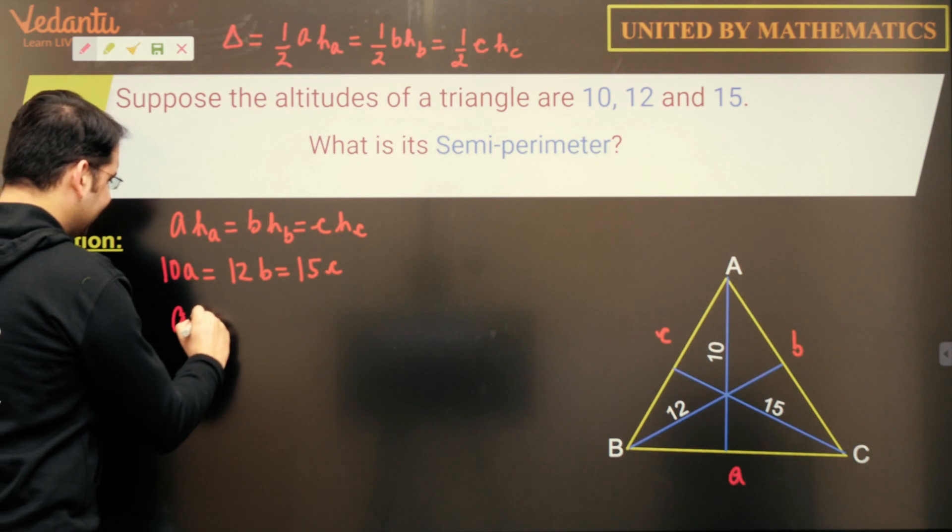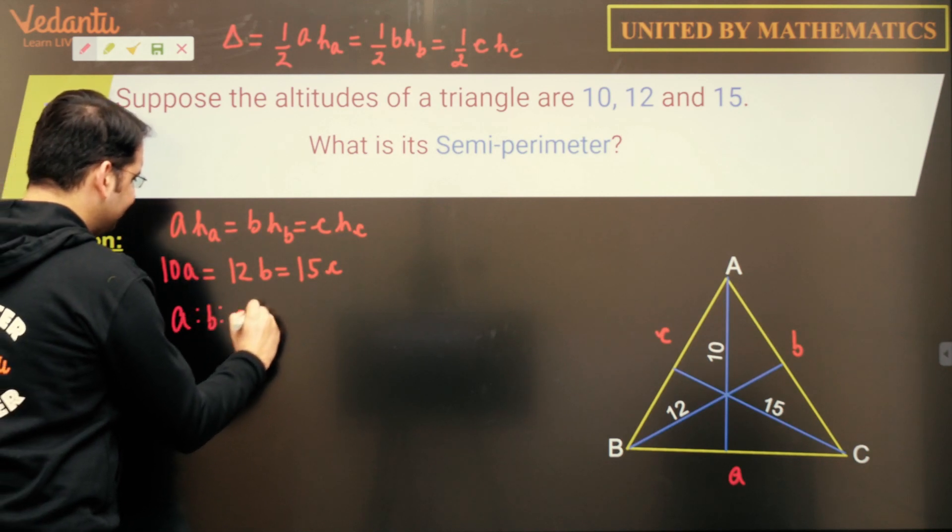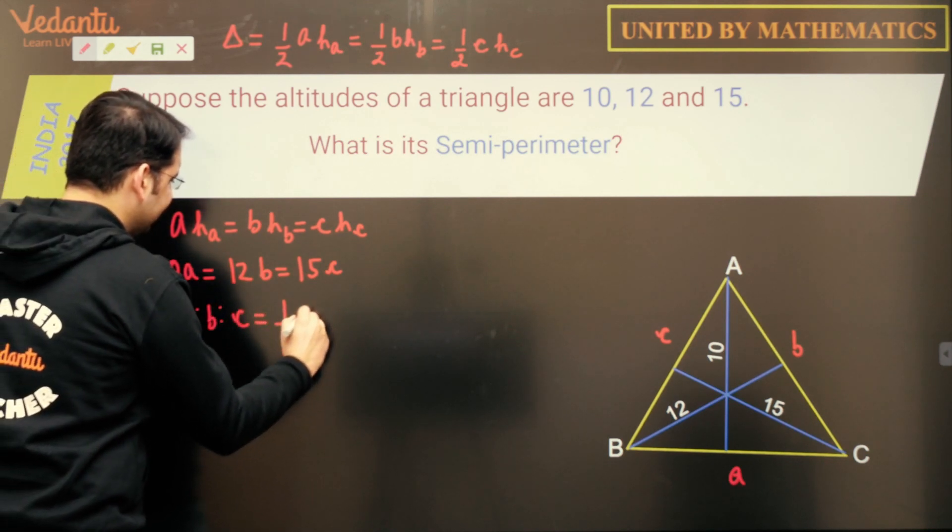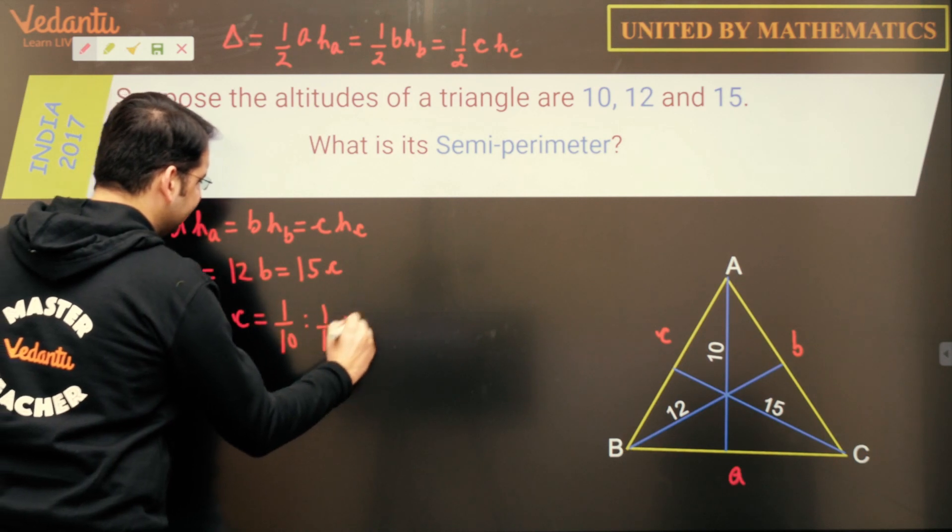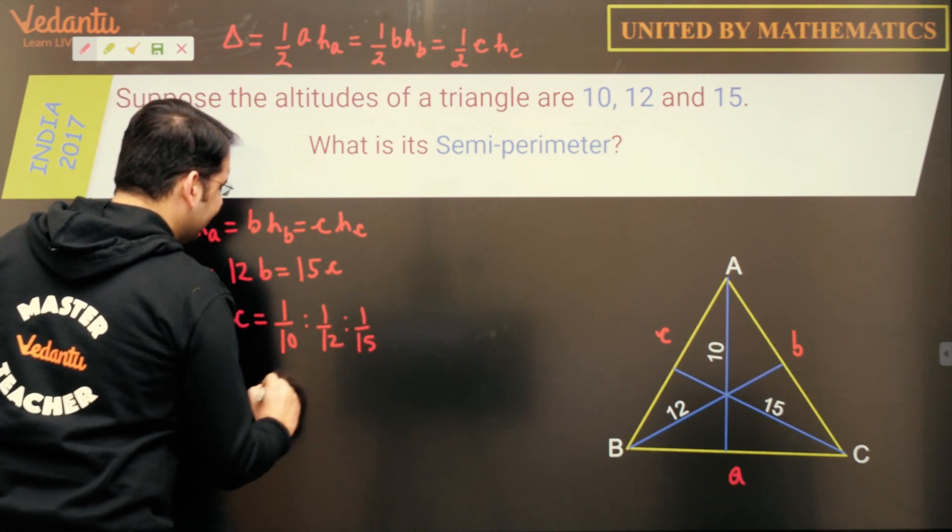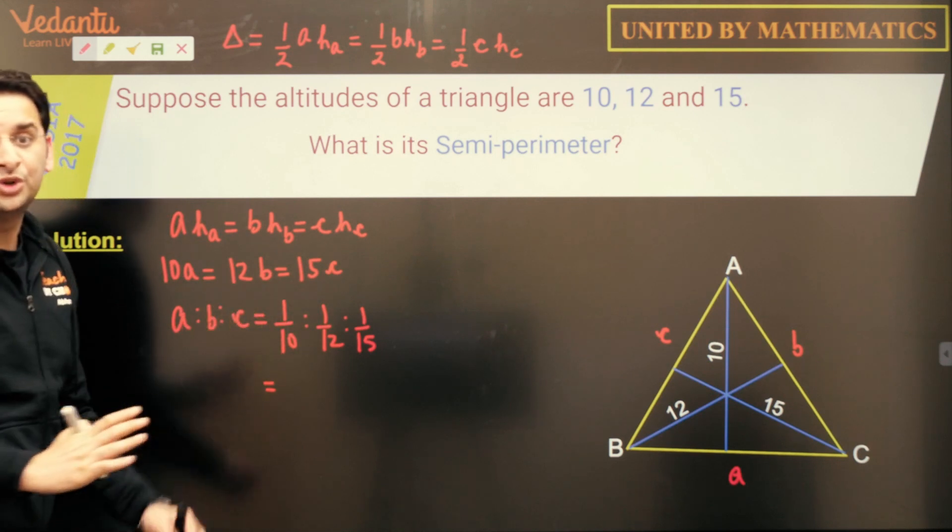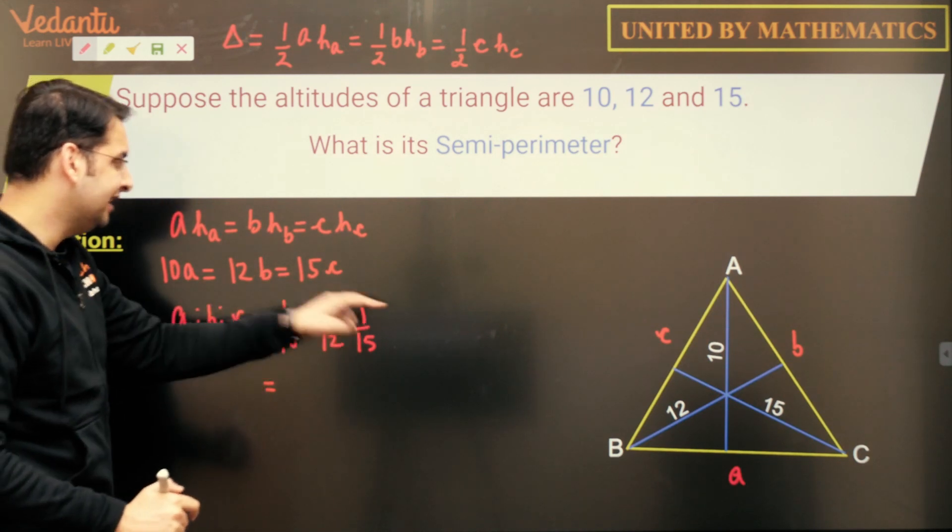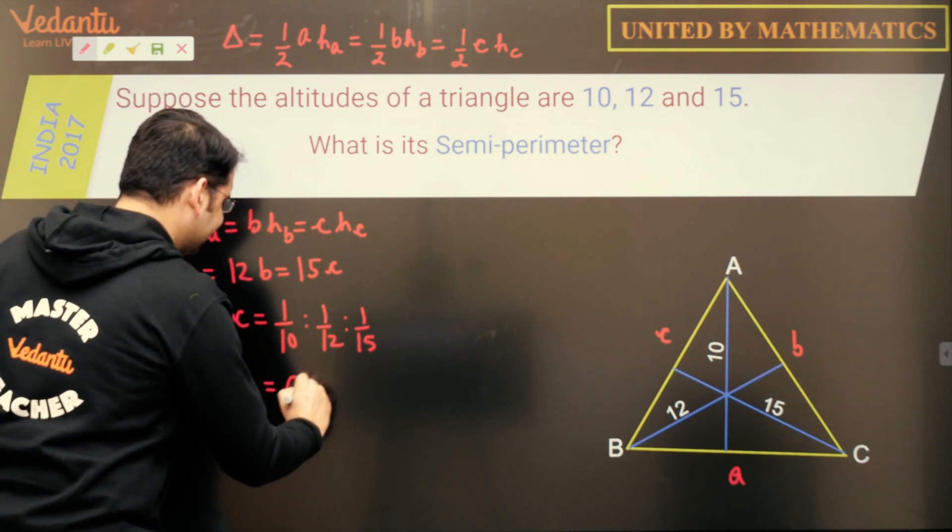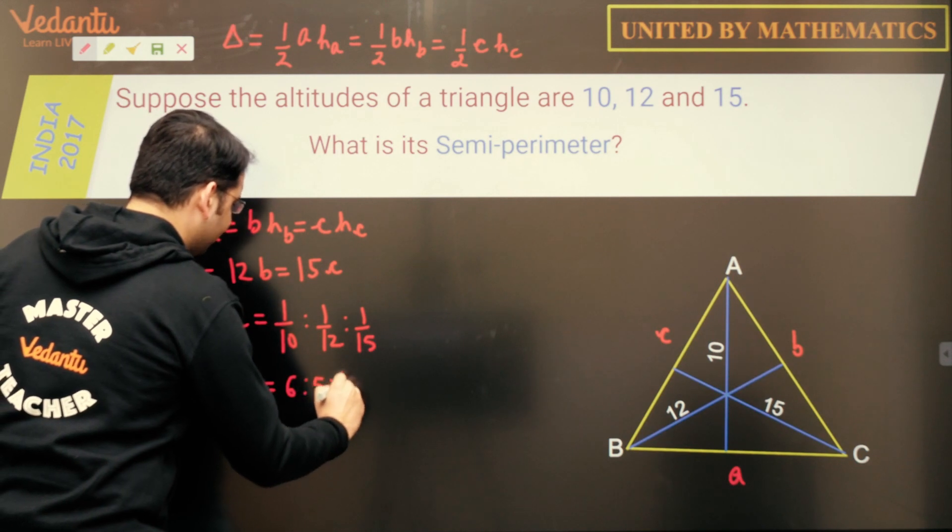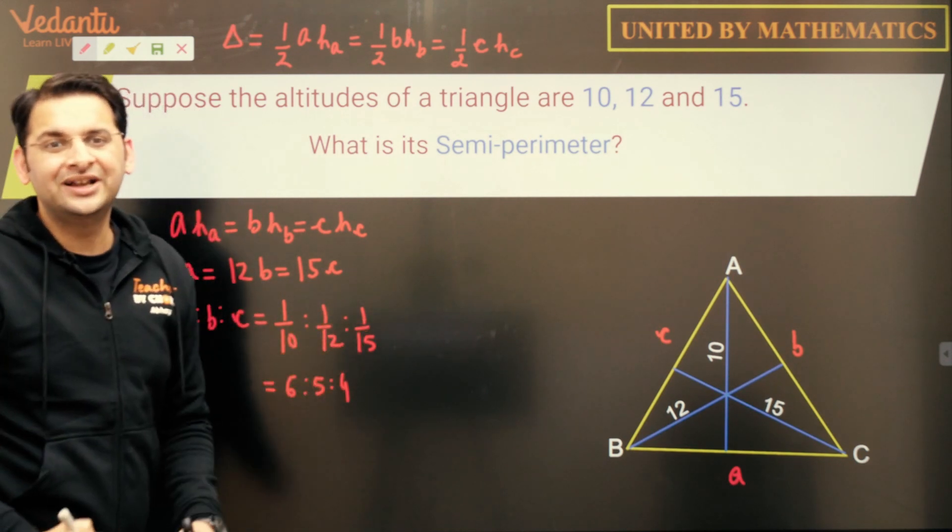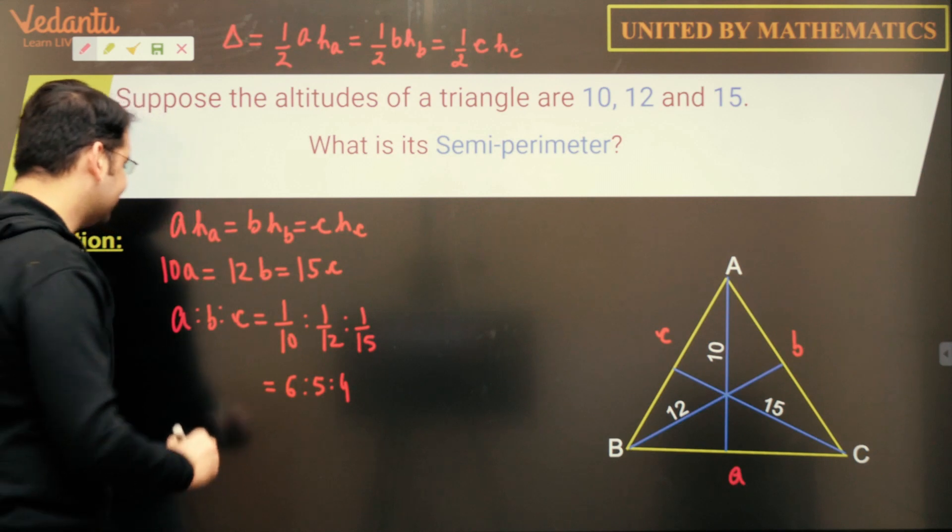And that means A is to B is to C is 1 upon 10 is to 1 upon 12 is to 1 upon 15. And if I multiply this ratio by 60 which is LCM of these three, I'll get 6 is to 5 is to 4. So what we have is, we have the ratio of the sides now.